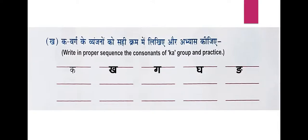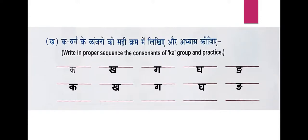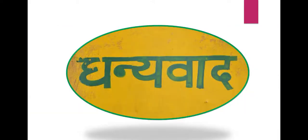Now practice all five letters again: K, K, G, G, Nga. Let's repeat once more — K, K, G, G, Nga. Dhaniwaad bachhon.